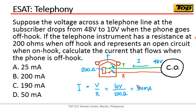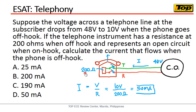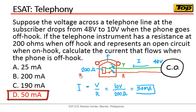So therefore the current equals 10 volts divided by 200 ohms, which gives us 50 milliamperes. The answer is letter D, 50 milliamperes. I hope this comes out in the board exam — thank you for viewing and I hope this will help you pass the board exam.